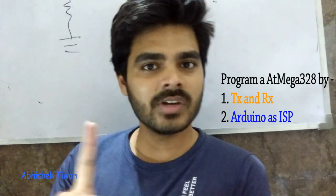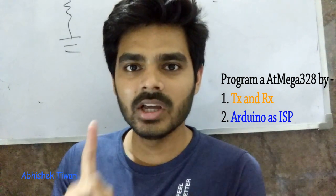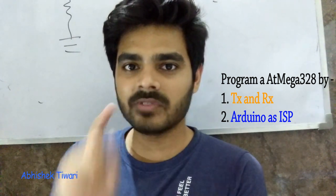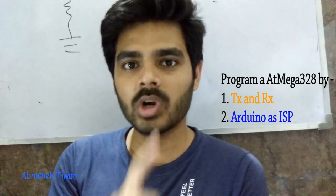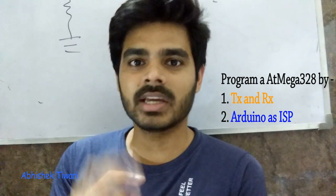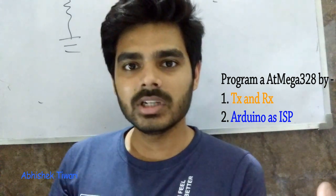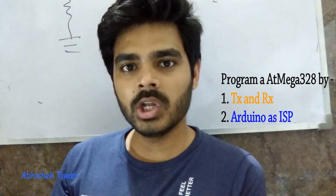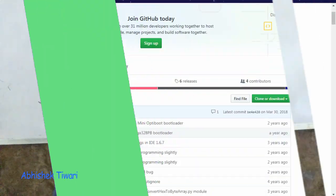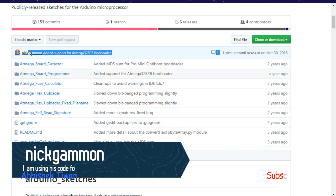The first method we will use is TX and RX. The first condition is that we need a bootloader to program the ATmega328. The second method is to use Arduino as ISP protocol to program the ATmega328.